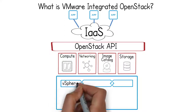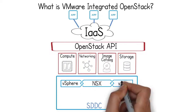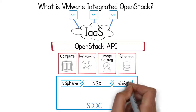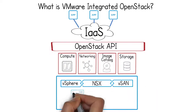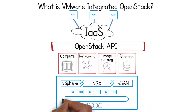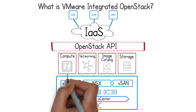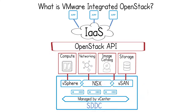Familiar tools like vSphere, NSX, vSAN, and vCenter interoperate seamlessly with OpenStack, making it easier for IT groups to run a production-grade OpenStack-based deployment on top of their existing VMware infrastructure.